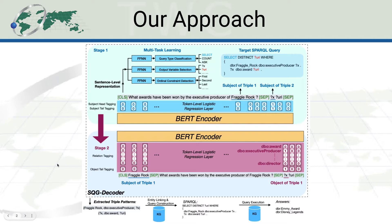To extract a semantic query graph, we propose a BERT-based decoder that performs multi-task learning for graph construction, such as entity detection, relation prediction, and query type classification.